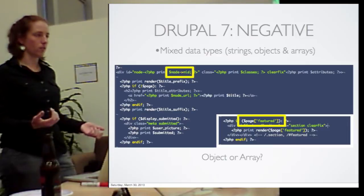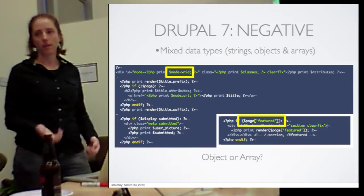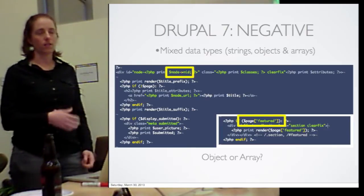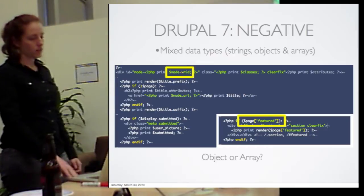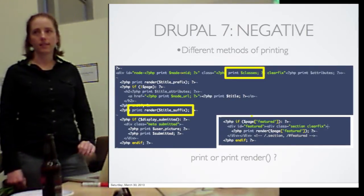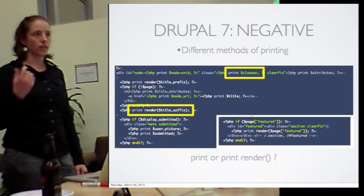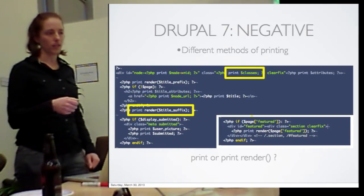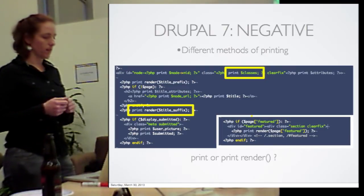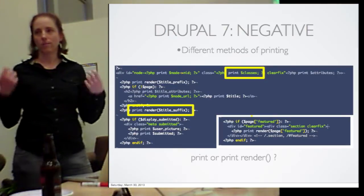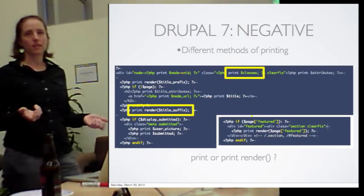Sometimes it's an object, sometimes it's an array. People don't need to know the inner workings of how Drupal deals with all its variables in order to write HTML code, but we're requiring that they understand it just to write a theme for Drupal. There are also places where you print a variable exactly as it is, and other places where you actually have to render the variable before you print it — print render. And conceptually, print and render mean the same thing, so it's confusing.